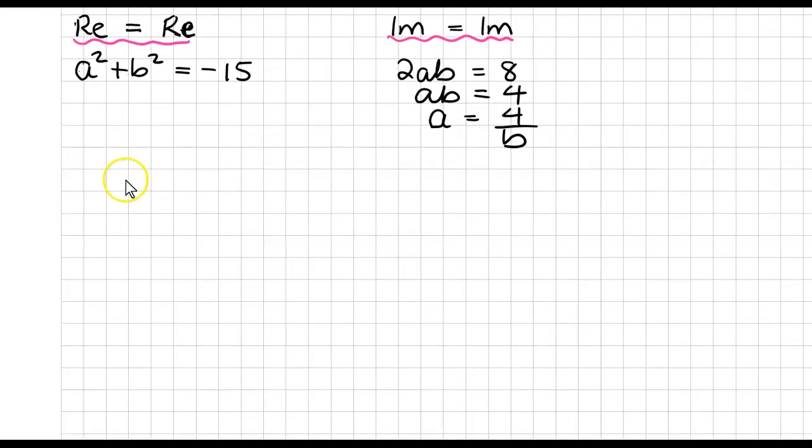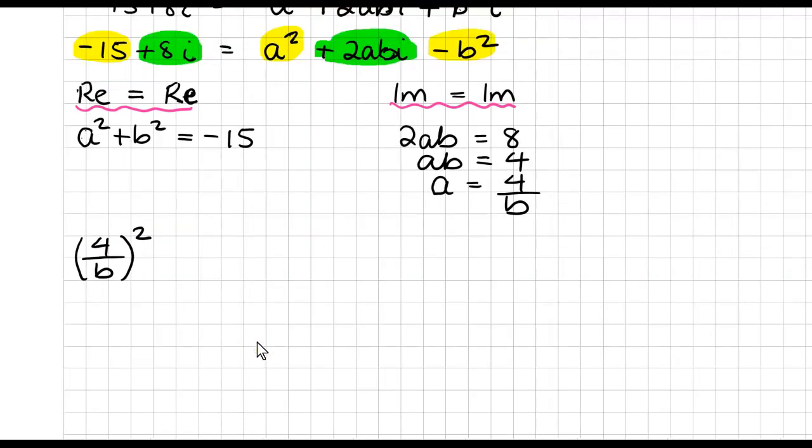Now we'll go back over here then, and we'll change that A into 4 over B, and we need to square that. But we also have then, sorry, now just go back to this, that was actually, if I look, that's an A squared minus B squared, just going back and looking here.